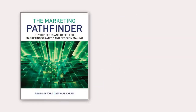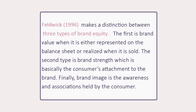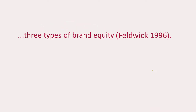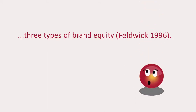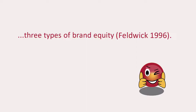How can we reference an author's ideas without actually reading that author's work? Let's say you're reading this book by Stuart and Sarin for your marketing assignment. In it, the authors refer to ideas written by another author. You would like to use Feldwick's ideas in your assignment. Ideally, you should read his article, published in 1996. But you can't find his article. Although we haven't read it, there is a way we can still include this second author's ideas without plagiarising.